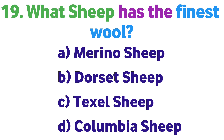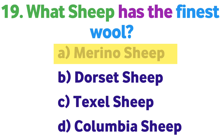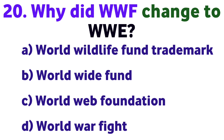Question number nineteen: What sheep has the finest wool? Option A: Merino sheep, B: Dorset sheep, C: Texel sheep, D: Columbia sheep. Correct answer is A: Merino sheep.